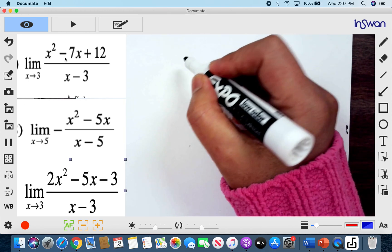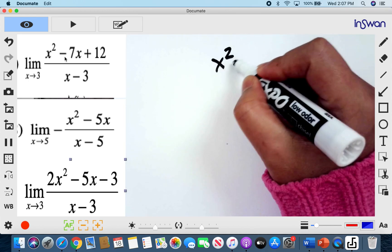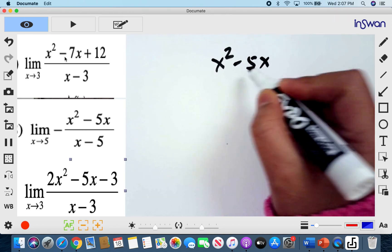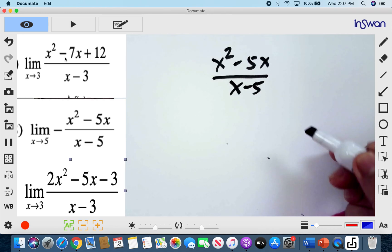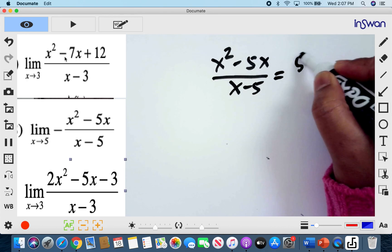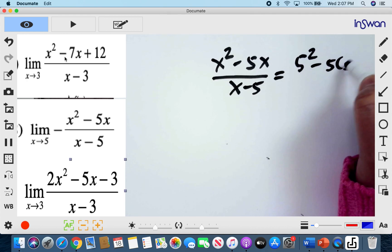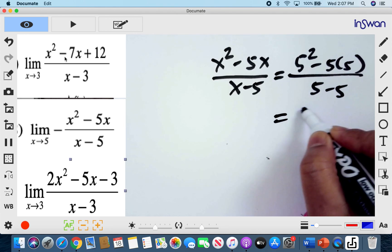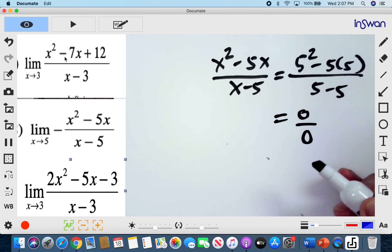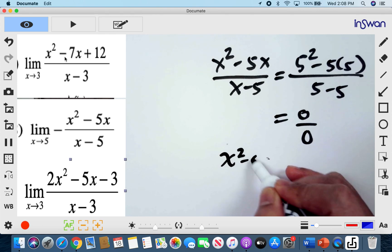The next one, we have x squared minus 5x over x minus 5. And our x is approaching positive 5. So you will have here 5 squared minus 5 times 5 all over 5 minus 5. Again, we will be getting an indeterminate in our expression. That means we can still factor this out.